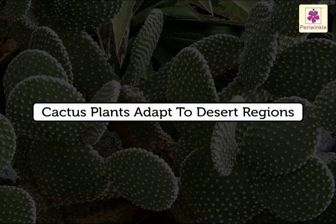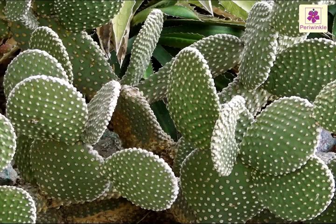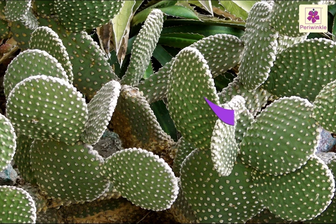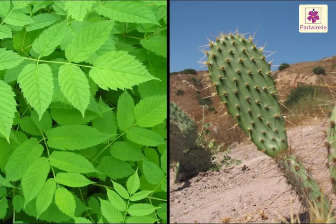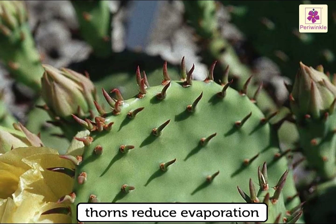Cactus plants adapt to desert regions. Cactus plants are found in the desert regions. The flat green parts are its stem, which help it to prepare its food and store water. The thorns are its leaves. Since there is very little water in the desert, the leaves are reduced to thorns, which helps the plant to reduce evaporation of water through its leaves.